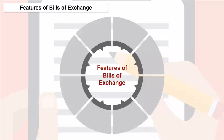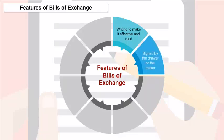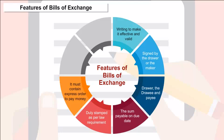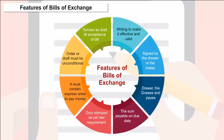Bills of exchange must be in writing to be effective and valid. It needs to be signed by the drawer or maker. The drawer, drawee, and payee must all be certain. The sum payable on the due date must be a certain amount. It should be duly stamped as per law. Date and place should be in order. It must contain an express order to pay money and money only — nothing is acceptable in kind. The order must be unconditional. It is termed a draft until acceptance is made by the drawee or buyer.